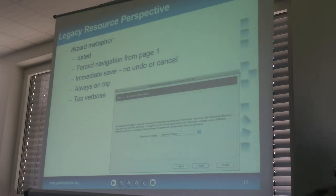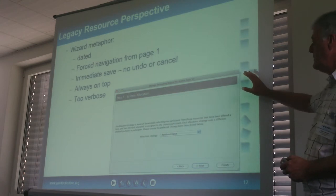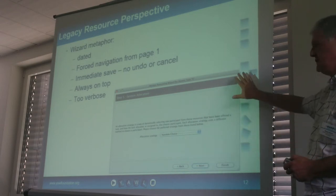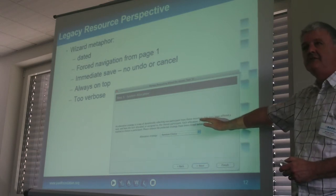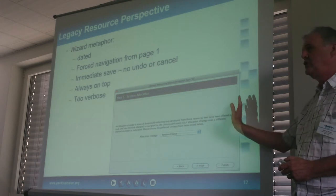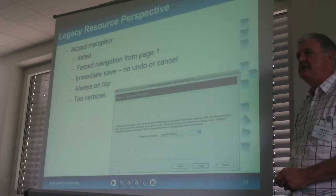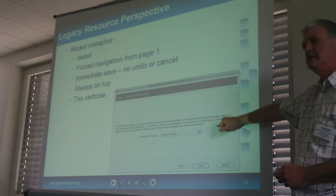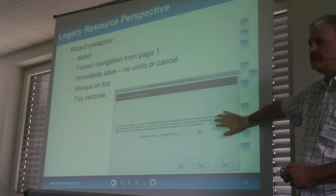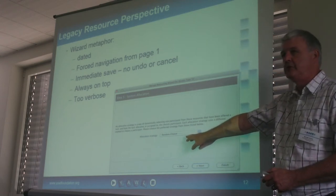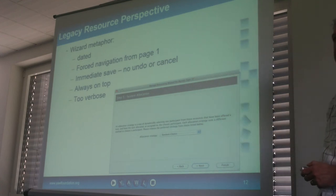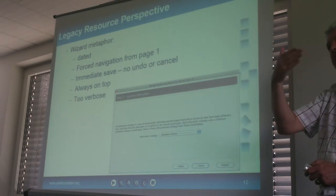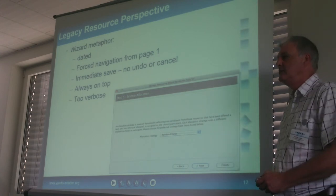For the resource perspective, the wizard metaphor is old and has other problems. If you wanted to change anything, you had to start from page one each time and flick through to the thing you wanted to change. As soon as you make a change in that series of dialogues, it's saved — so there was no option to cancel out or roll back changes. It's also too verbose: every time you open it, it gives you a full help-type text, so for one drop-down box you've got a huge screen area taken up. And also it's always on top — if you open it and switch to something else, it always remains on top even if you go to a Word document, which is very annoying.